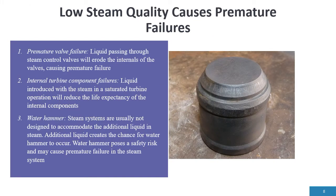Low steam quality can cause premature failures in components — it happens all the time. Premature valve failure occurs because condensate passing through a valve will tear the valve internals apart. As you can see on the right-hand side, the erosion of the valve is from condensate passing through. Internal turbine component failures are also a detriment — condensate passing through a saturated or superheated steam turbine is harmful. Additionally, if steam quality is very poor, the additional condensate can build up and cause water hammer. It has a negative effect throughout the system, and that's one of the key reasons we need to be monitoring steam quality.